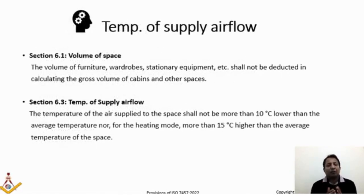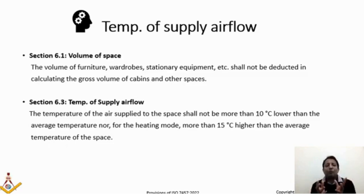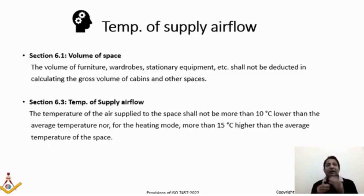Section 6.1 talks about volume of space. The volume of furniture, water, stationary equipment, etc. shall not be deducted when calculating the gross volume of cabins and other spaces. When calculating ventilation air using air changes per hour, you need the room volume — and it is strictly stated that you cannot deduct the volume of stationary items like chairs, furniture, or beds. You must consider the volume of a room as if it is an empty room.